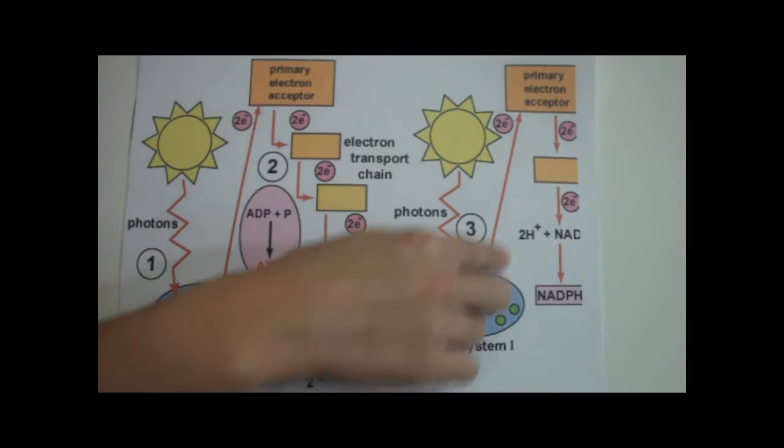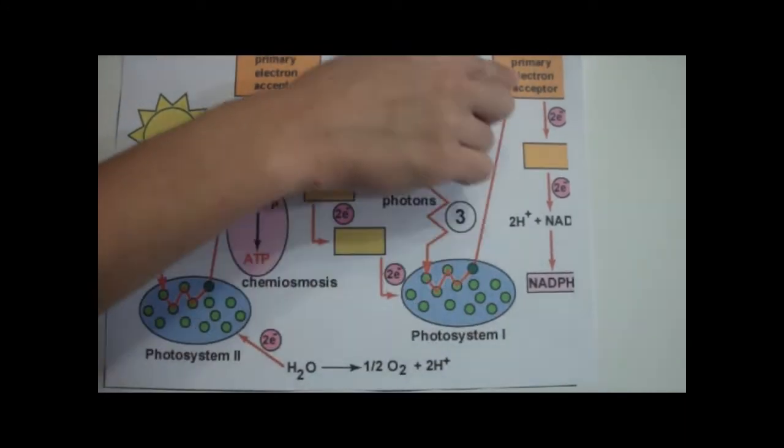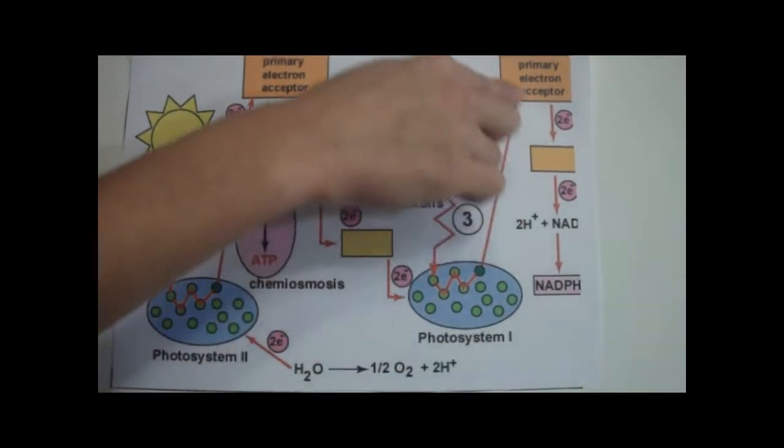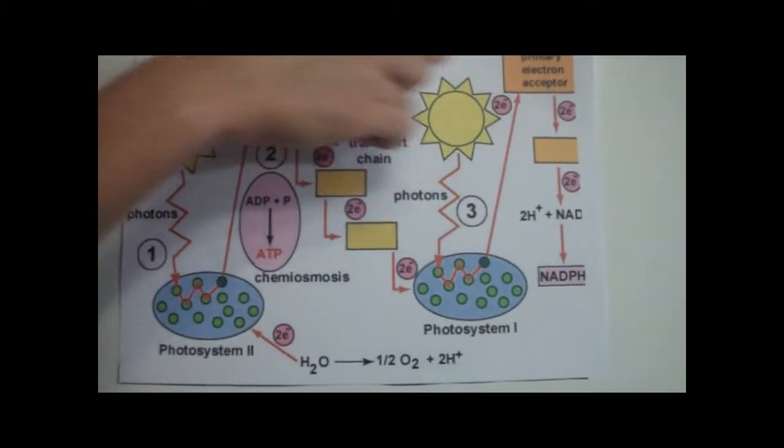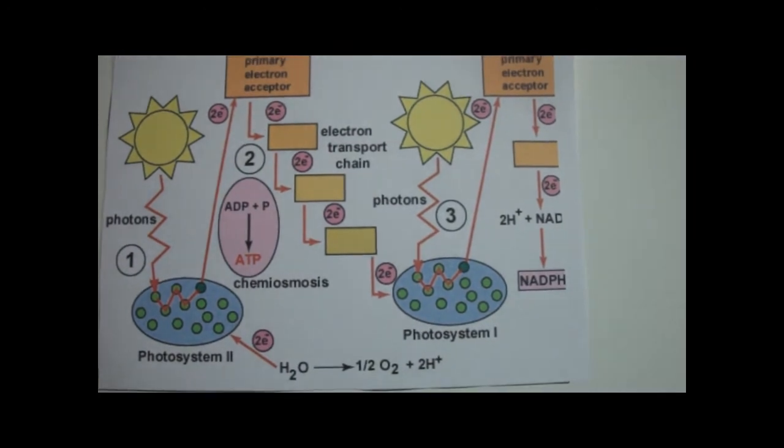Here, electrons travel from the electron carrier ferredoxin to the cytochrome complex and then continue on to the P700 chlorophyll in photosystem 1. ATP is produced via chemiosmosis.